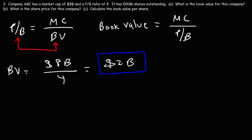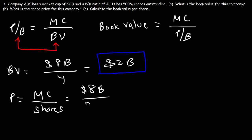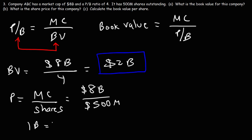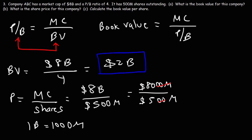Now let's move on to part B: what is the share price for this company? The share price equals the market cap divided by the shares outstanding. The market cap is $8 billion, and the shares outstanding is 500 million. Converting, $8 billion is $8,000 million, so we have $8,000 divided by 500. Canceling two zeros gives $80 over 5, and $80 divided by 5 is $16. So the share price for this company is $16 per share.